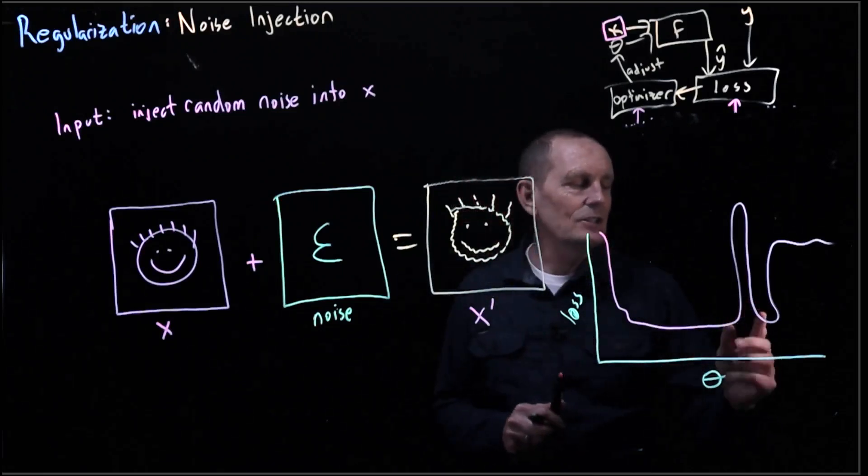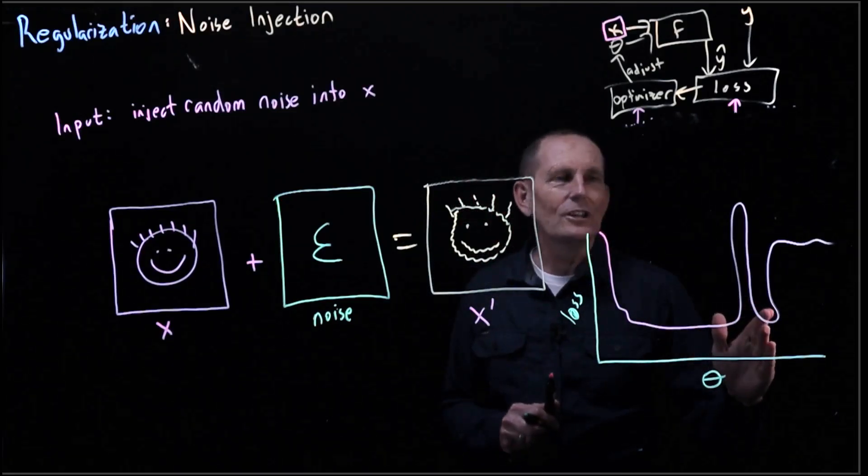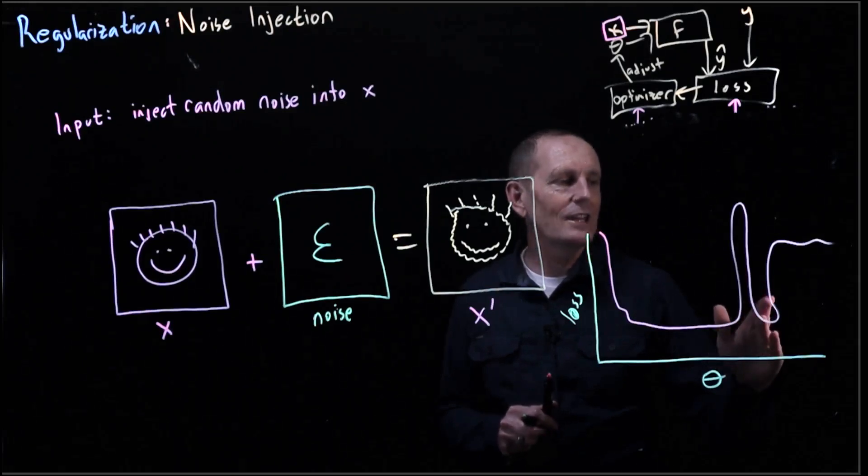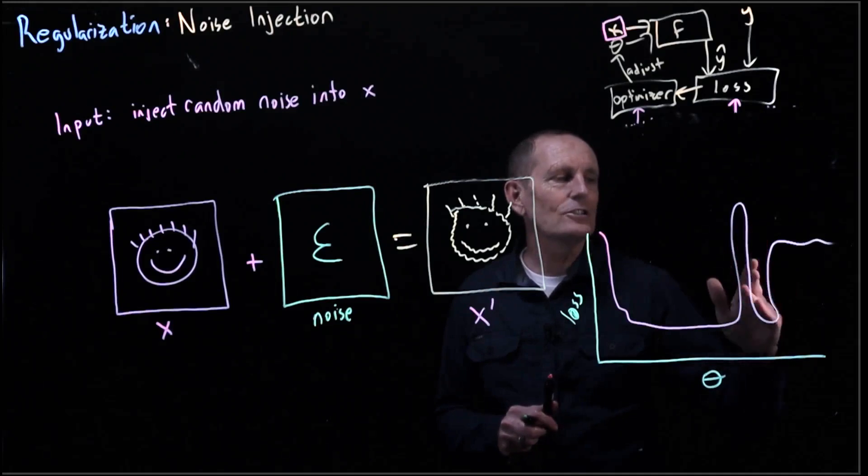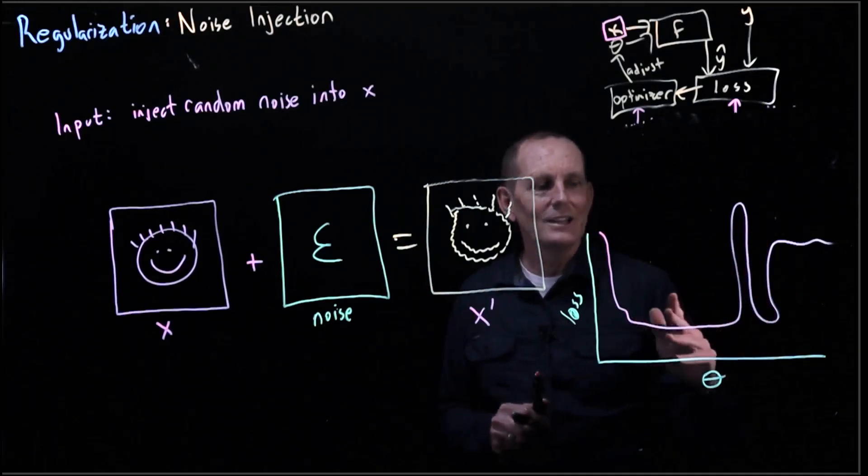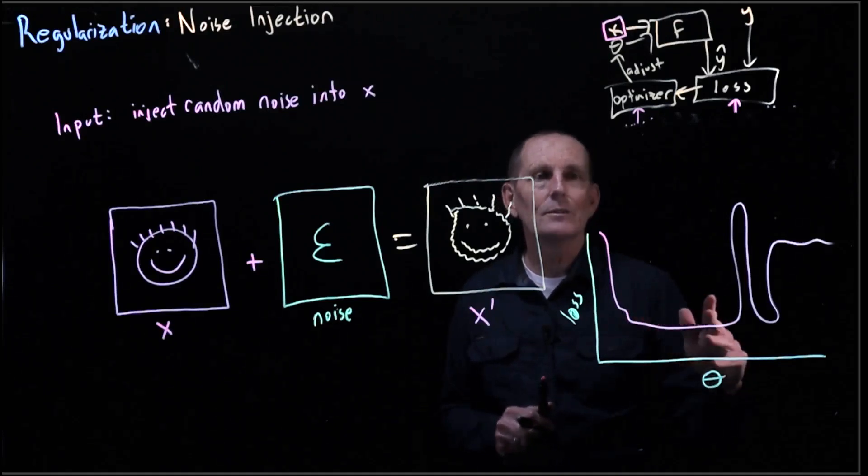I'm going to claim we would like a broad flat area for theta rather than being at the bottom of a canyon. And the reason is, in this location, we're not very robust. Small changes to theta can cause large changes to our loss. Whereas here, we are more robust. So this would tend to generalize better.